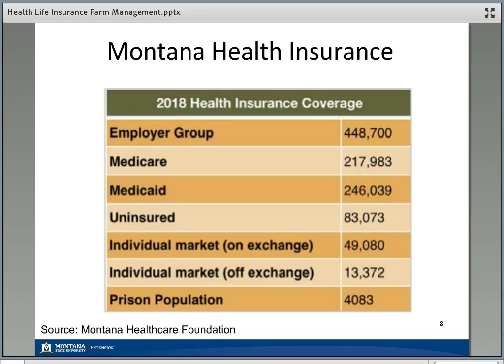A little over 80,000 people in Montana are uninsured — down a fair bit from years past, but still a sizable population. As part of the Affordable Care Act, healthcare.gov — sometimes called the healthcare exchange — was created, where you can compare plans and purchase health insurance as an individual or for your family outside of your employer. About 50,000 Montanans get health insurance that way, and about 13,000 purchase individual plans directly through a health insurance broker, not through the healthcare.gov platform.